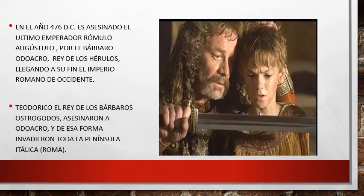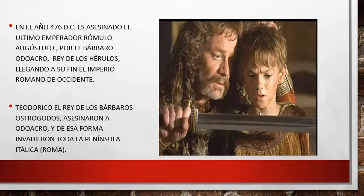Datos adicionales: en el año 476, el último emperador romano Rómulo Augústulo es asesinado por el bárbaro Odoacro, rey de los hérulos, llegando a su fin el Imperio Romano de Occidente. Sin embargo, Odoacro también es derrotado por el rey ostrogodo Teodorico, quien asesina a Odoacro e invade toda la península itálica. Posteriormente, los ostrogodos son derrotados por los lombardos, quienes se apoderan de toda la península itálica.